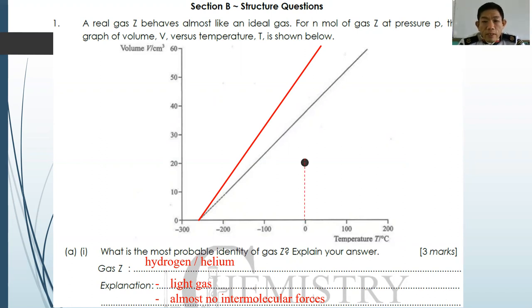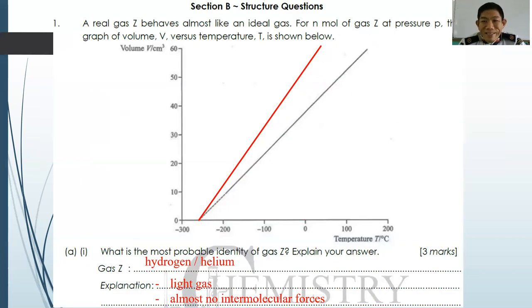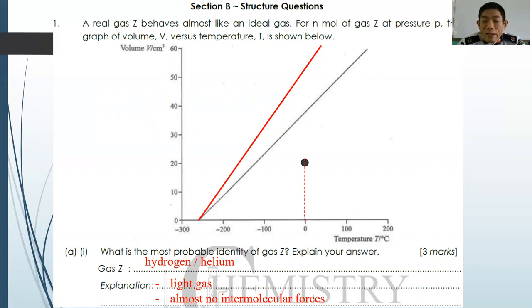Question number three: at pressure P and temperature zero degrees Celsius, gas Y shows a negative deviation. Mark the expected volume for gas Y on the graph. When a gas deviates from ideal behavior at zero degrees Celsius, it will have a lower volume than the ideal gas line. So at zero degrees Celsius, any point below the ideal gas line is considered correct — as long as the volume is lower.